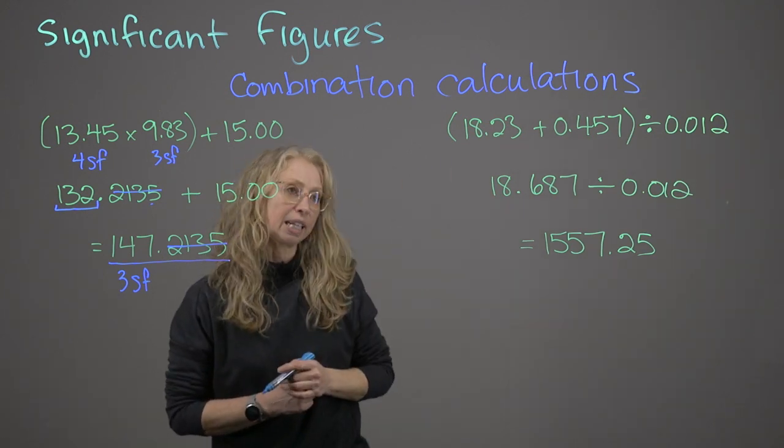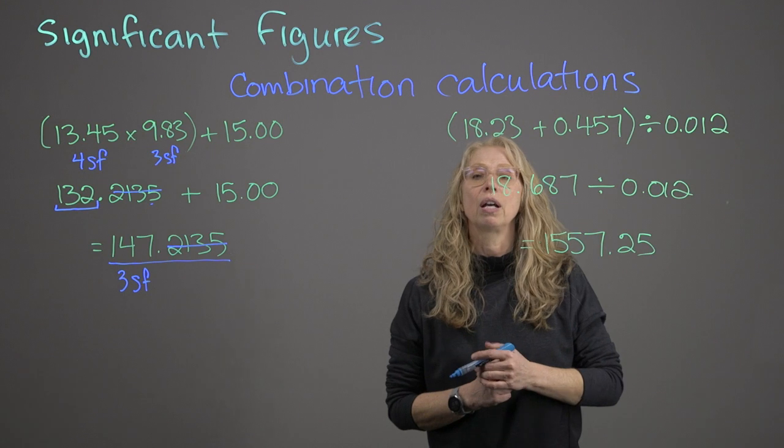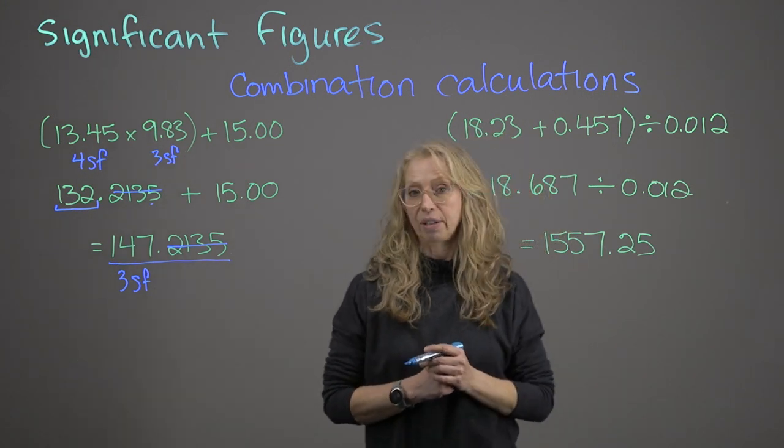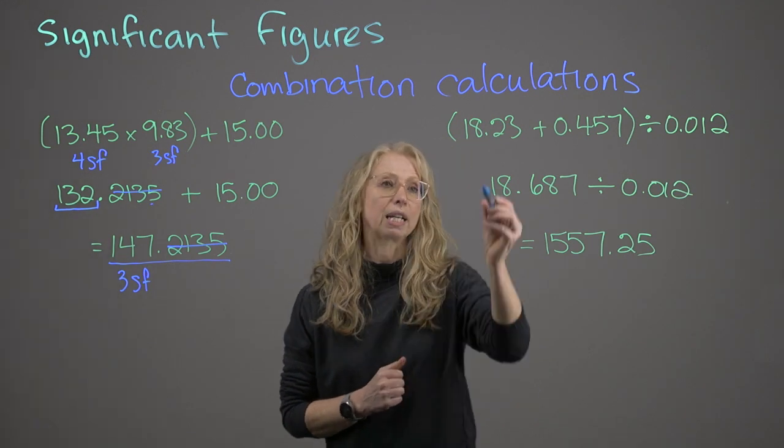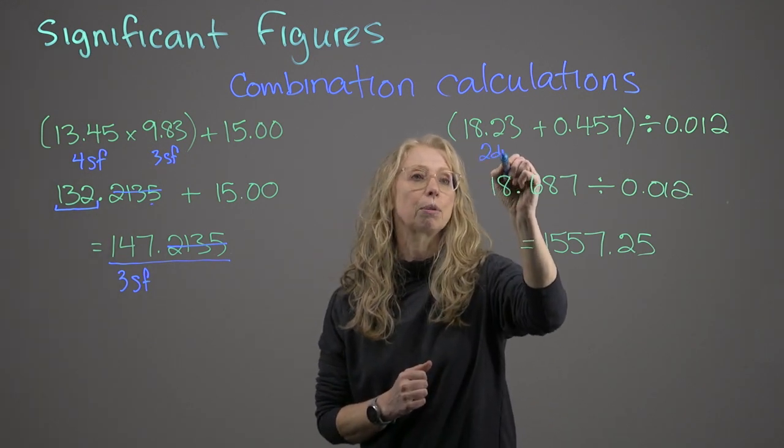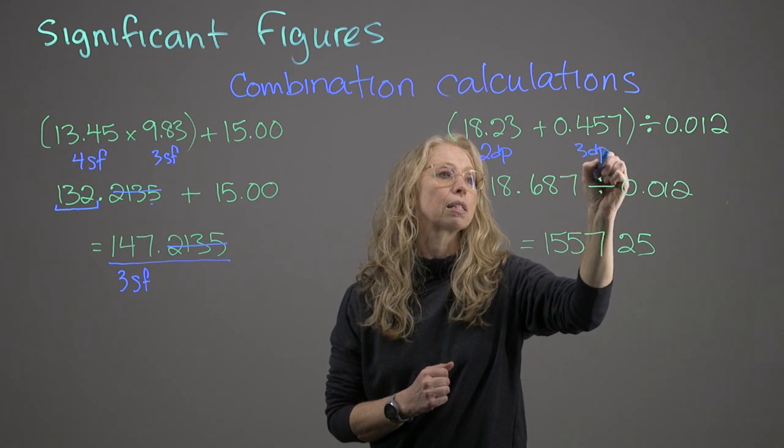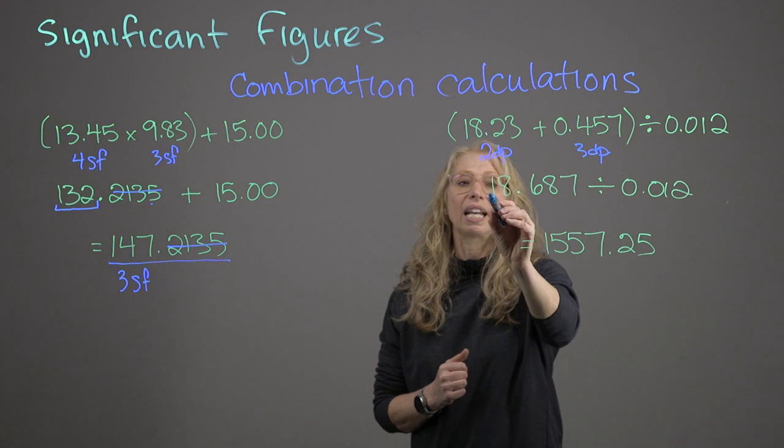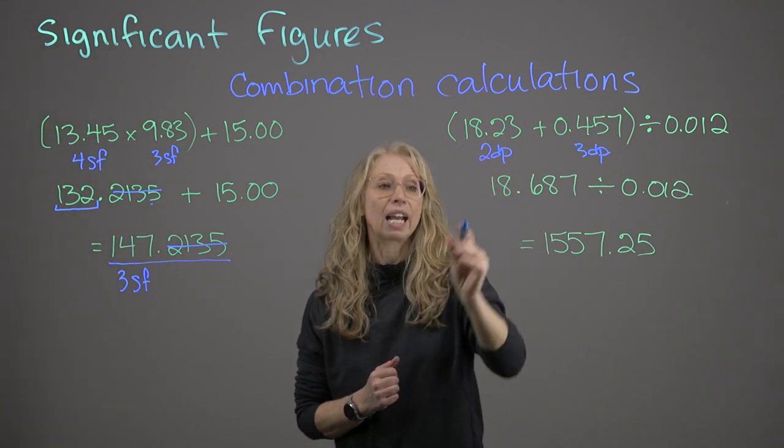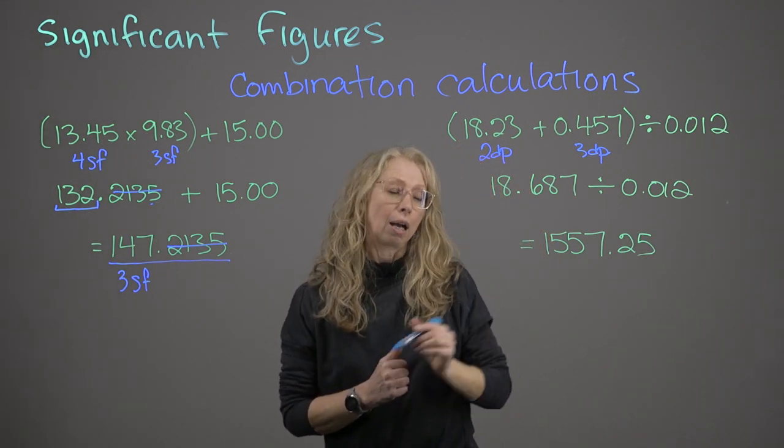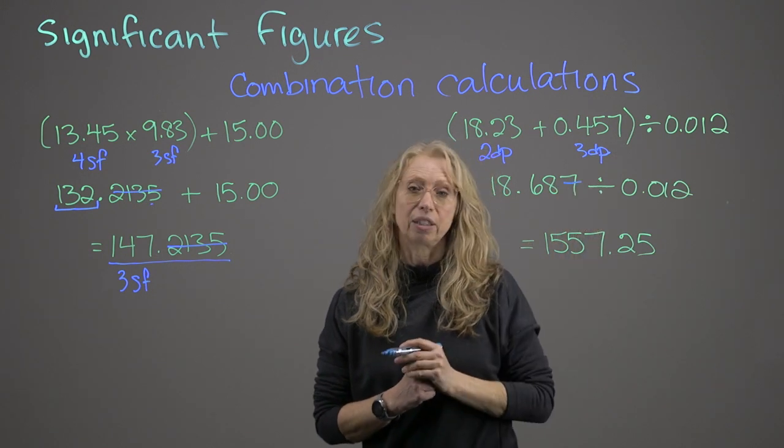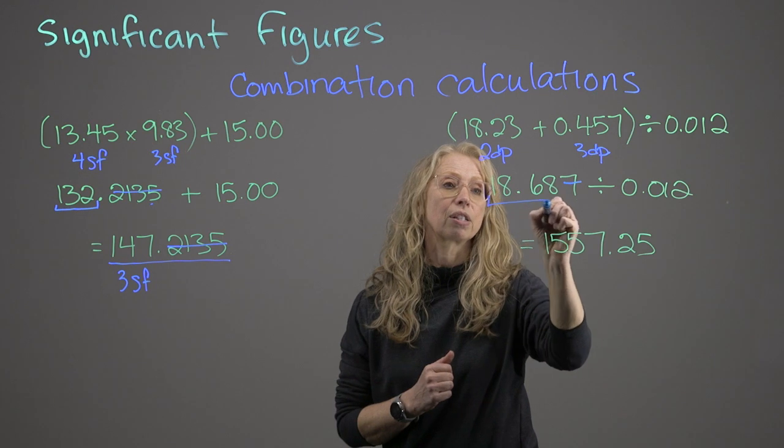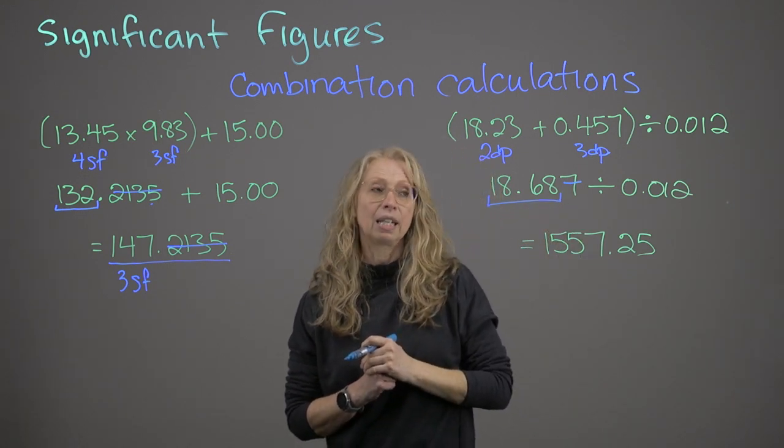Now let's look on this side. In parenthesis, we have 18.23 plus 0.457, least number of decimal places. Here we have two decimal places, and here we have three decimal places. So if I take that value and plug it into my calculator, I get 18.687. I can't factor in the seven. I need to have two decimal places, so my answer is 18.68.